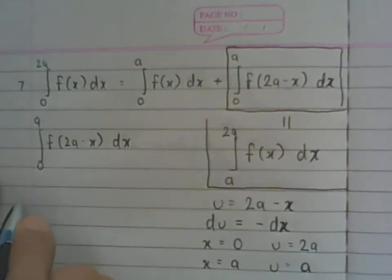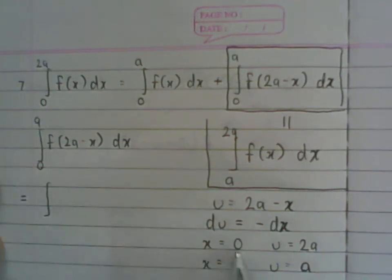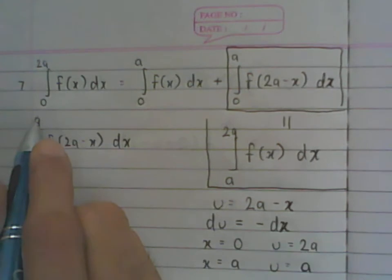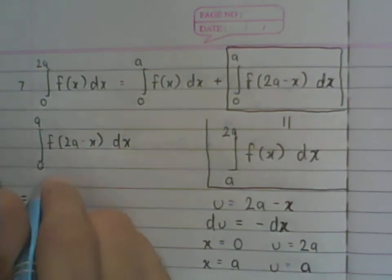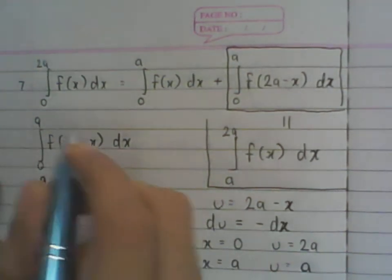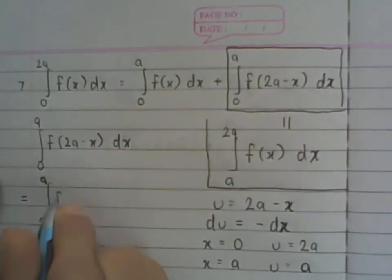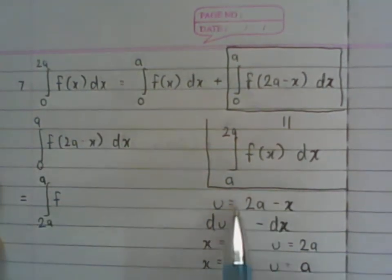If I rewrite this integral, the lower limit changes from 0 to 2a, and the upper limit stays at a. Inside, we substitute 2a minus x as u, so it becomes f(u).